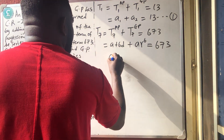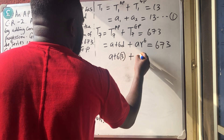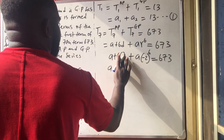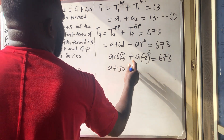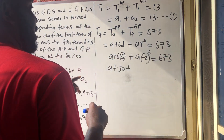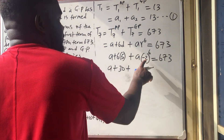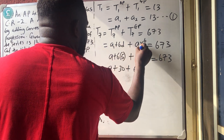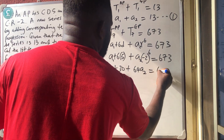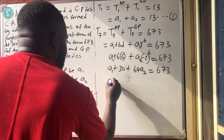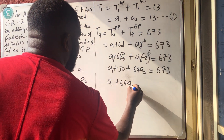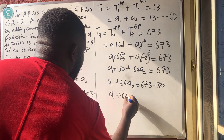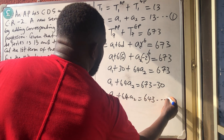Simplifying: minus 2 to the power 6 gives 64. So I have A1 plus 30 plus 64A2 equals 673. Therefore A1 plus 64A2 equals 643 — equation 2.